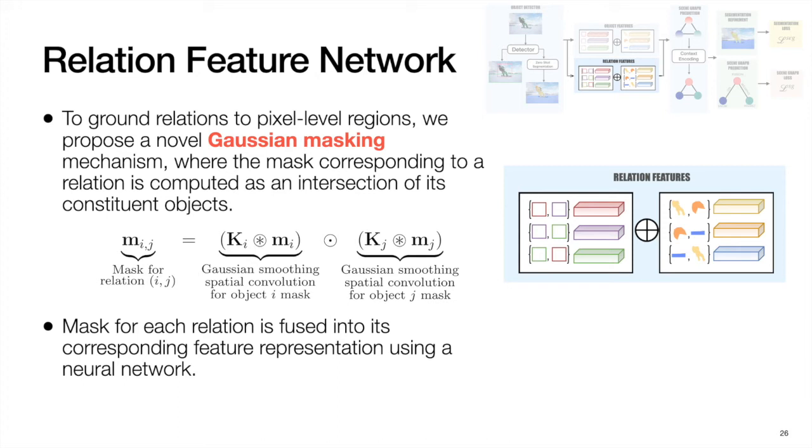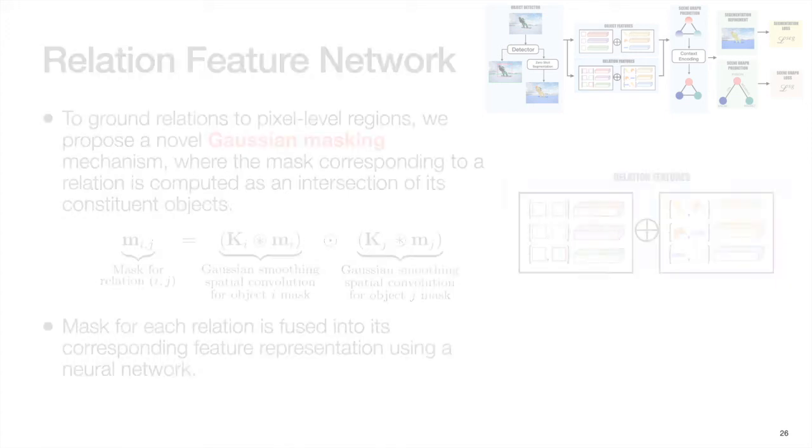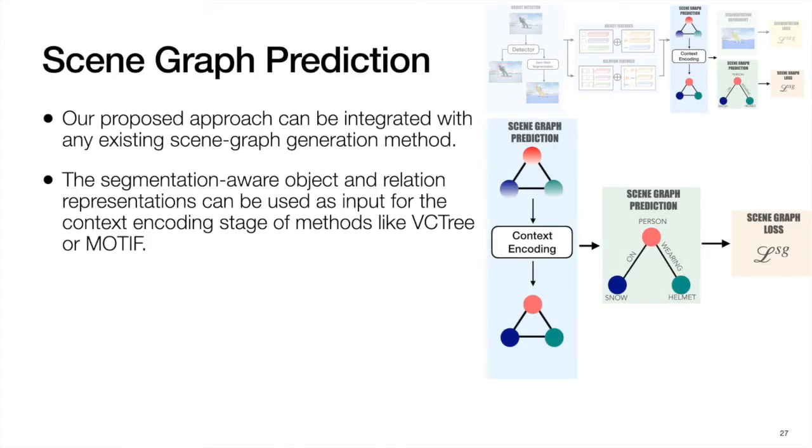Similar to object features, a segmentation-aware relation representation is obtained by providing this relation mask to a neural network. The segmentation-aware object and relation representations are provided as input to the global context aggregating stage of methods like VCTree and Motif. Our approach can therefore be used with any existing architecture.